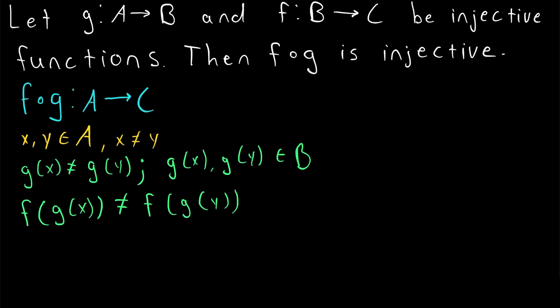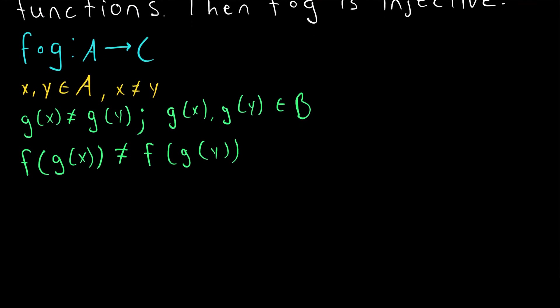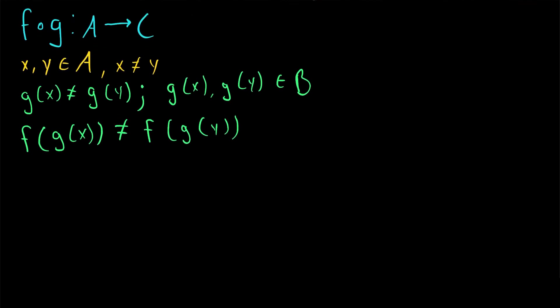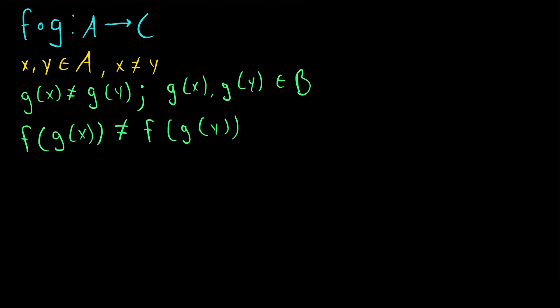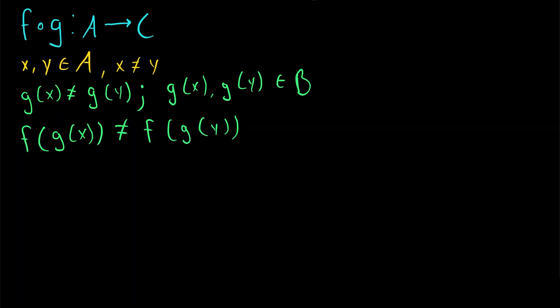Since G of X is not equal to G of Y, and we assumed that F is an injective function, we know that the image of G of X and the image of G of Y under the function F must be distinct. F of G of X is not equal to F of G of Y, because F is injective — distinct elements put into F come out also being distinct.